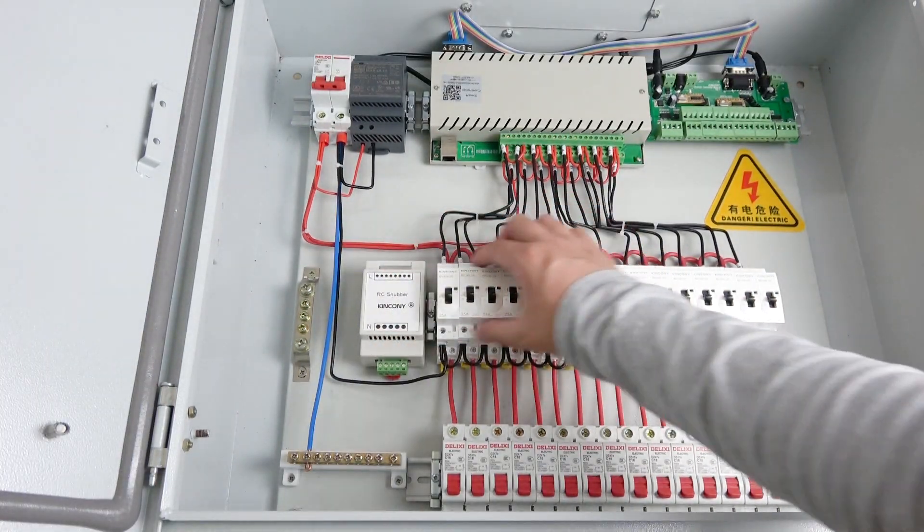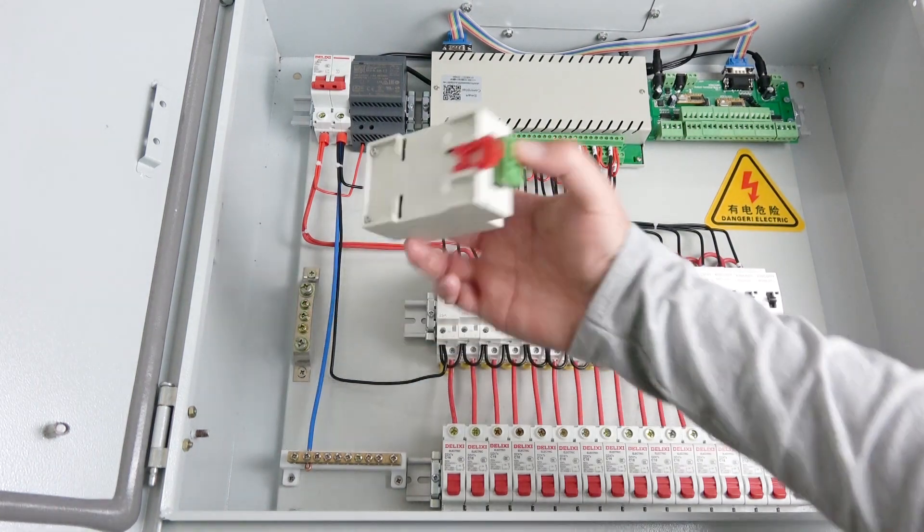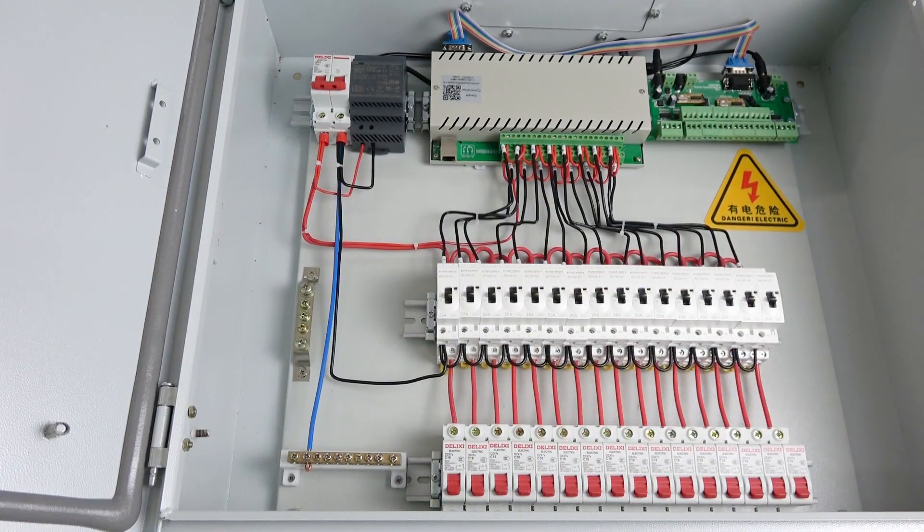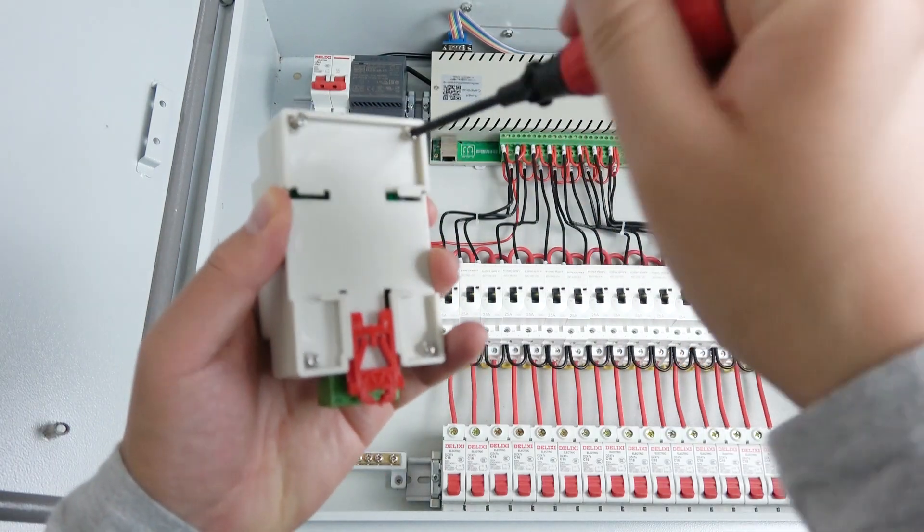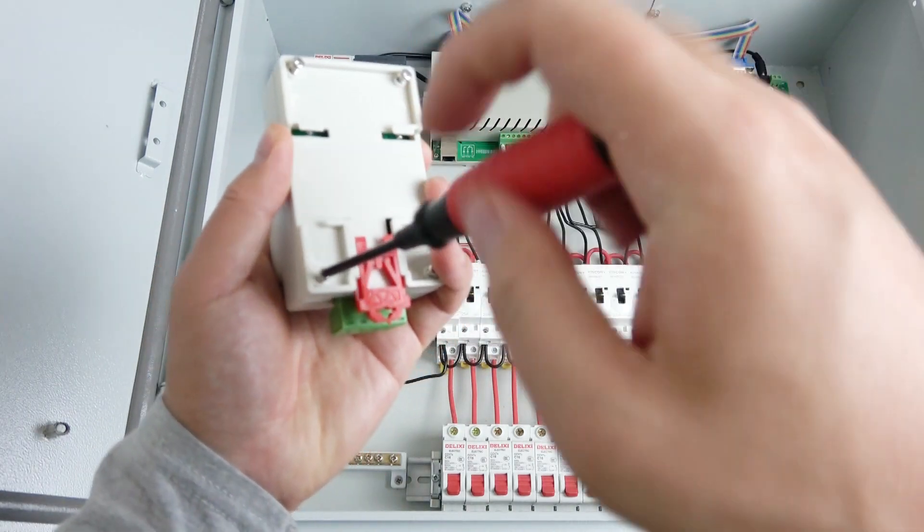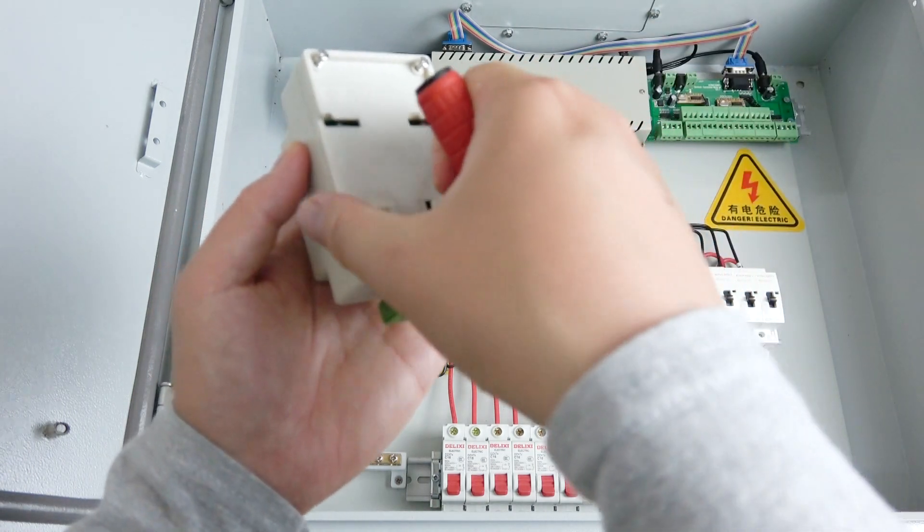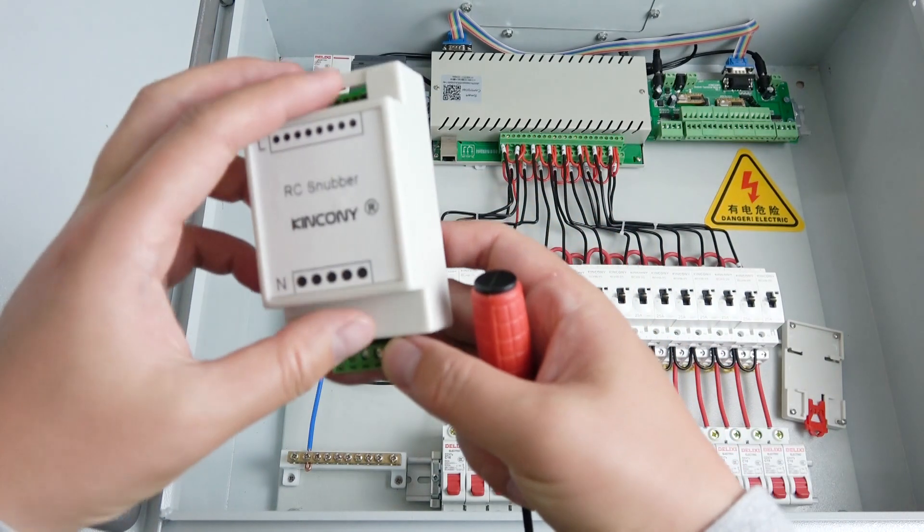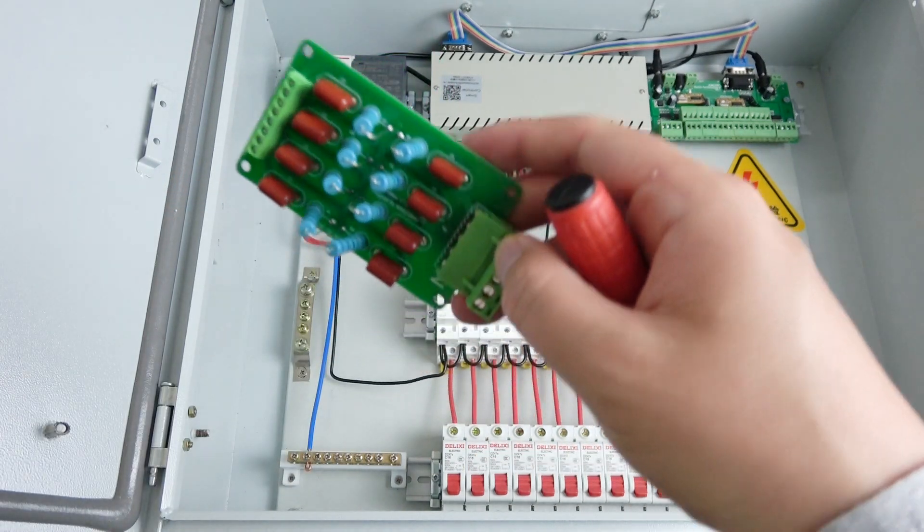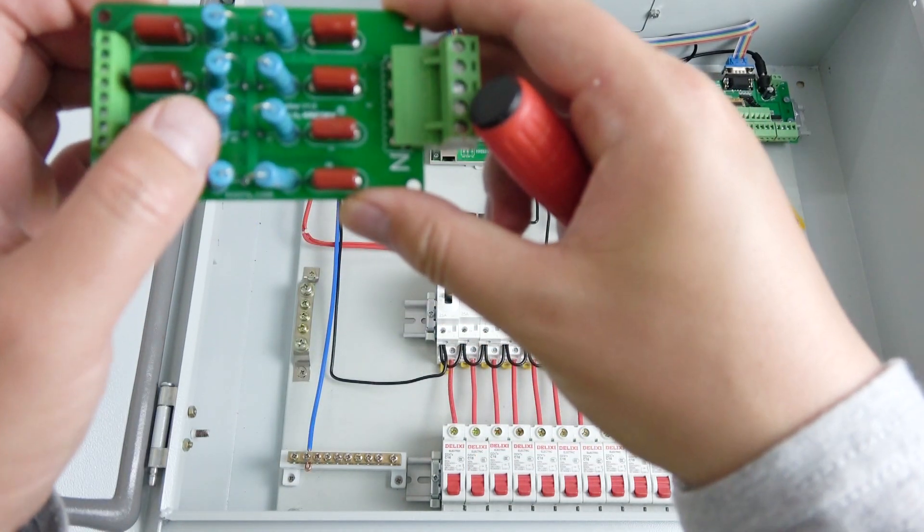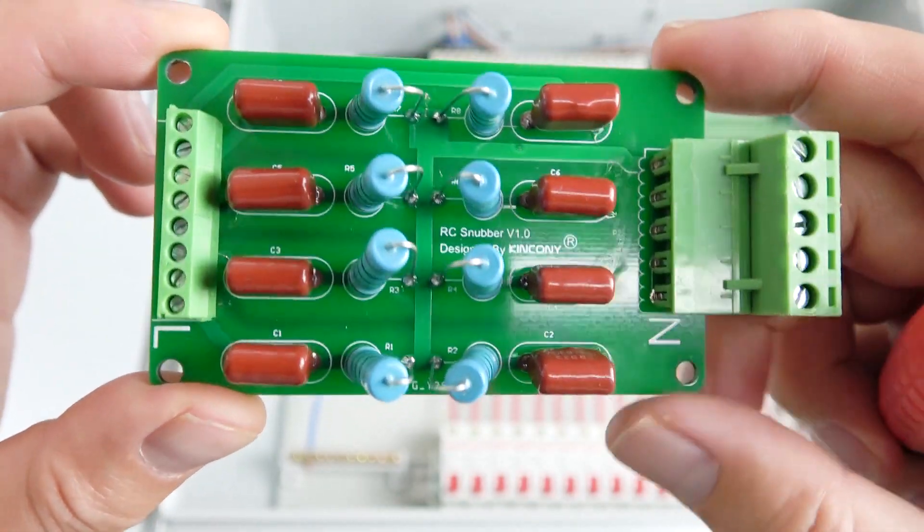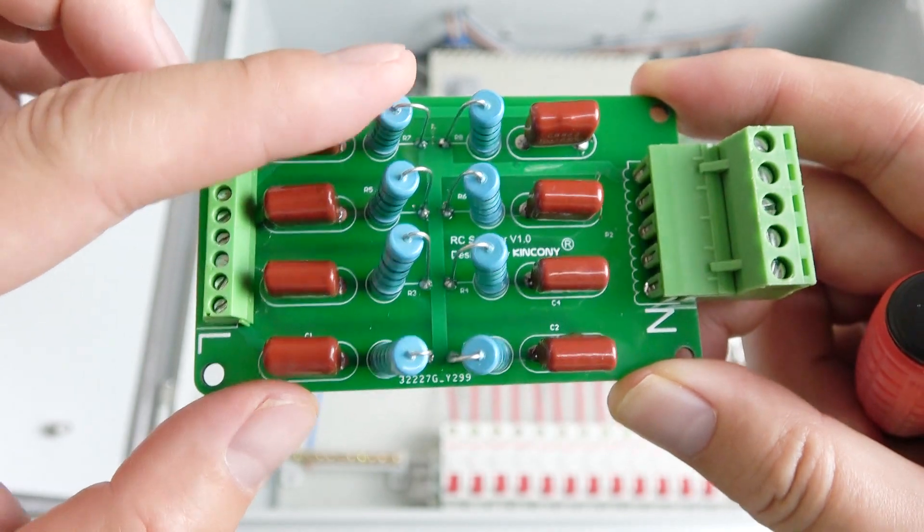So this is for the contactor. Now we can open it. And what is inside, we will have a look. And you can see this board consists with the resistors and the electrical capacity. So this is eight channels, eight capacitors and eight resistors.